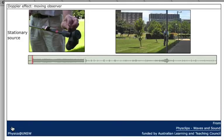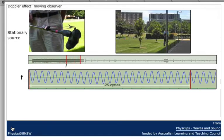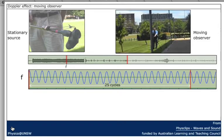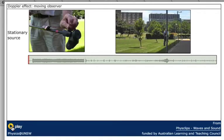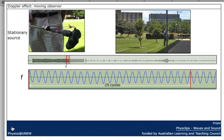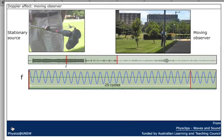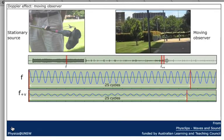Now we're going to look at Joe again. This time Joe is wearing the microphone which detects the sound, and he's going to ride past the source. So the source is now stationary, and Joe — the observer — is moving. You can hear the steady pitch of the source, here's Joe approaching the source, and moving away from the source. So now you've observed the phenomenon and heard it for yourselves.